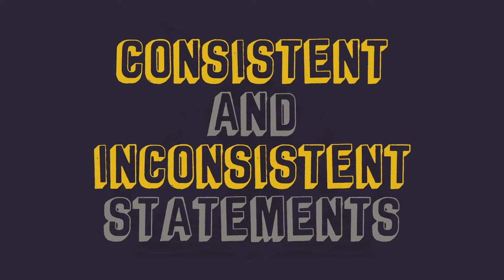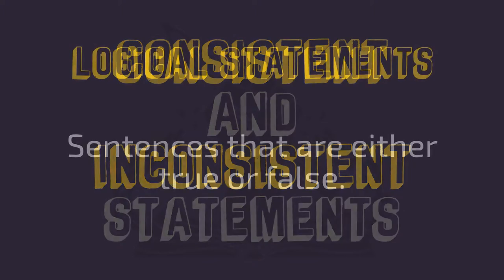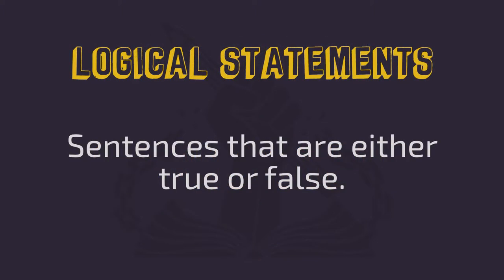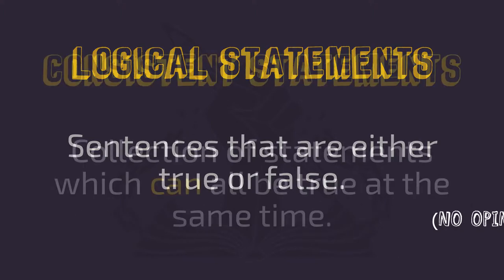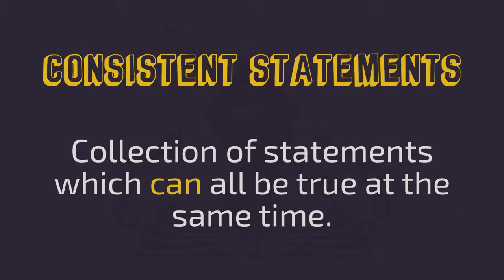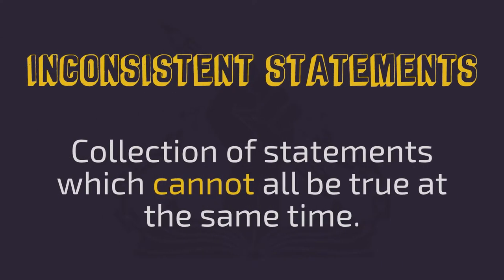Remember, in this phase of the class we are only dealing with statements that can either be true or false — we are not looking at things like opinions or commands. When we talk about logically consistent statements, we refer to a set of statements, not just one, which can all be true at the same time. Inconsistent statements are the inverse of this: they are a collection of statements that cannot all be true at the same time.